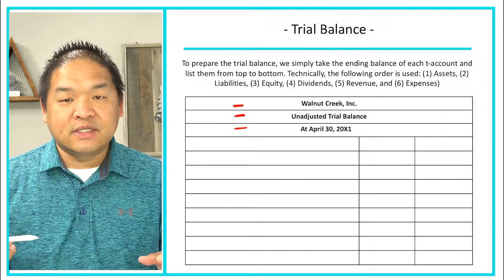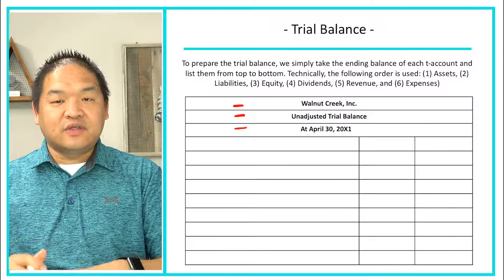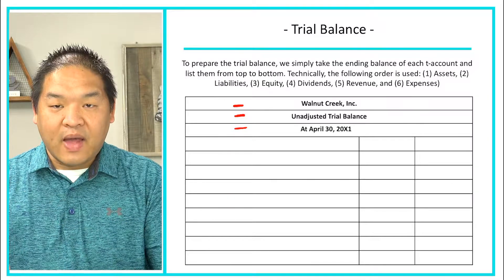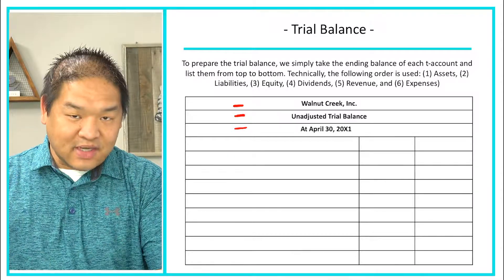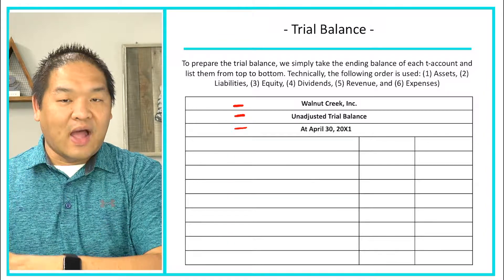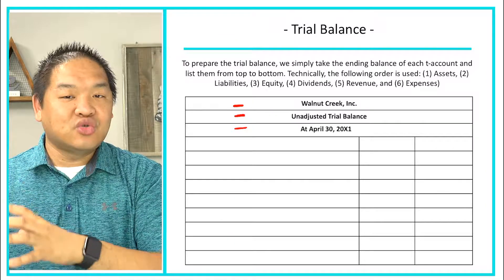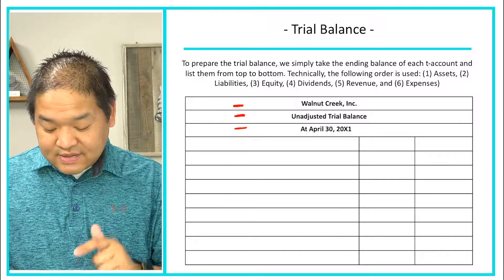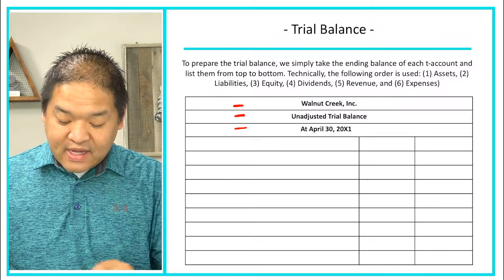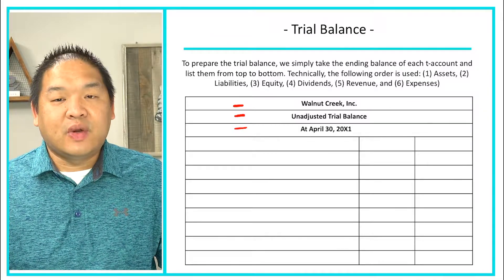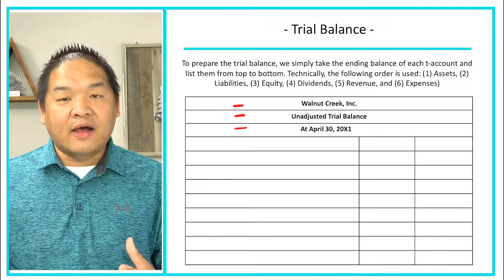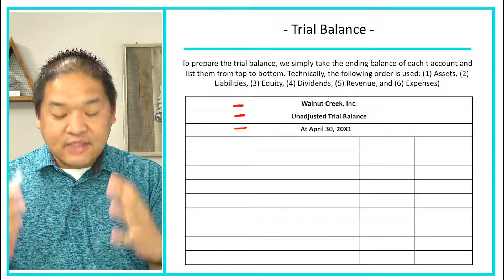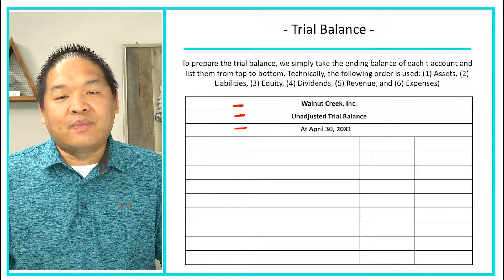After adjusting entries, we'll do an adjusted trial balance, then closing entries, and then a closing trial balance — so there are different trial balances. This one is labeled as the unadjusted trial balance, dated as of April 30th, 20X1. A trial balance is as of a date in time rather than a period in time.